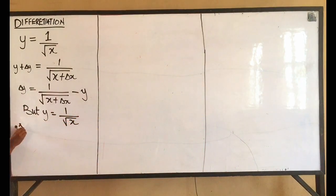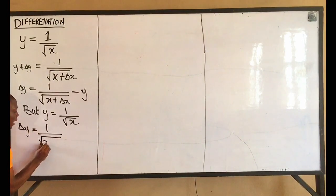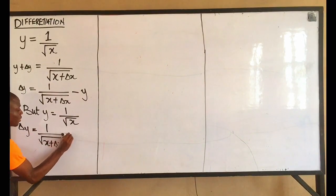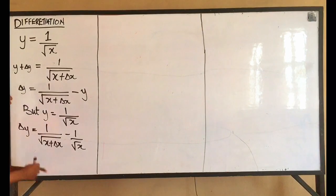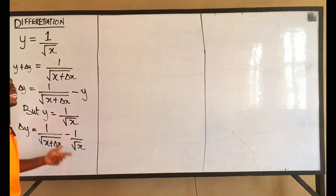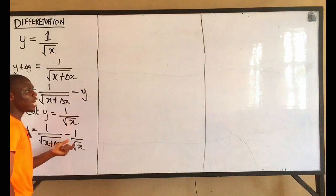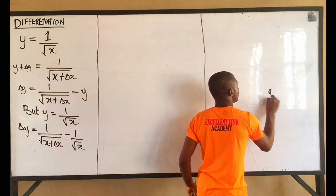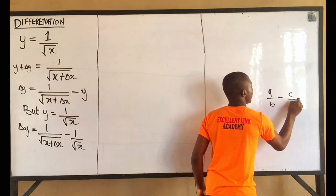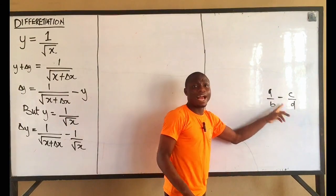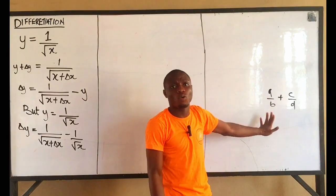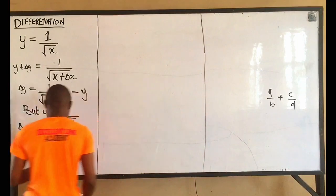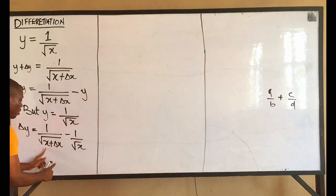From here, change in y is now equal to 1 over root(x + Δx) minus 1 over root x. At this point I can see two fractions with a negative sign in between them. Looking at this: if I have a/b minus c/d, these are two fractions and I need to find the LCM.